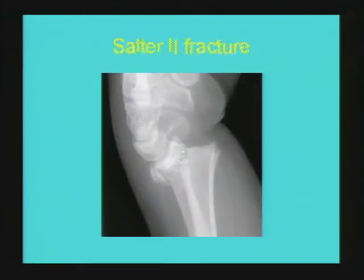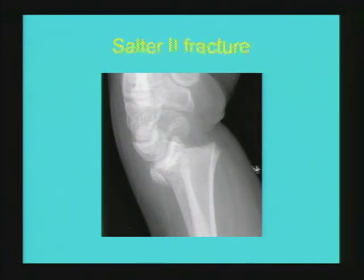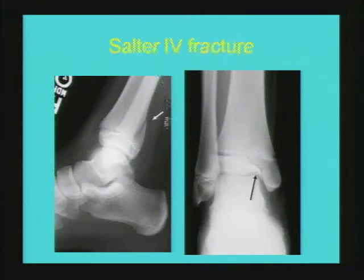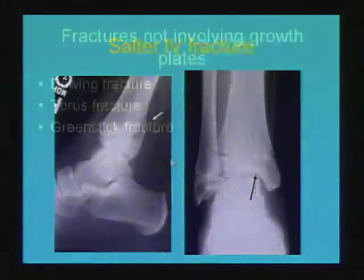Example of Salter 2 fracture: fracture through the metaphysis extending through the growth plate with displacement — a displaced type 2 Salter-Harris fracture. Salter type 3 fracture involves the epiphysis and the growth plate. Salter type 4 fracture involves the posterior metaphysis, epiphysis, and growth plate of the distal tibia.